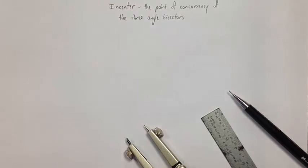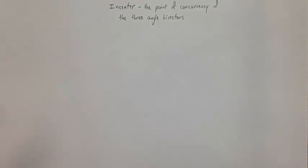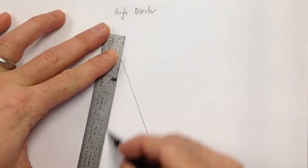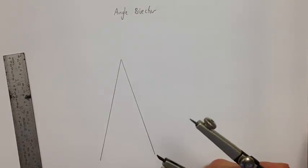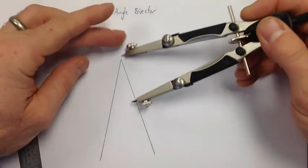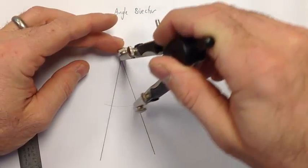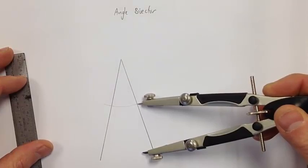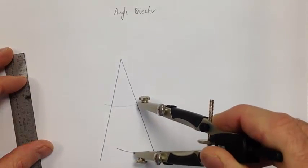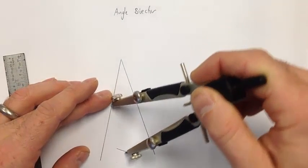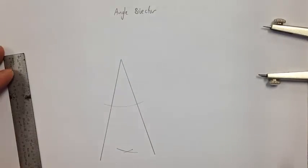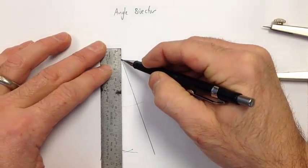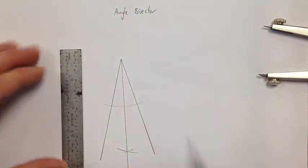Now we'll construct the in-center, which is the point of concurrency of the three angle bisectors. First, let's review the angle bisector construction, starting with any random angle. We open the compass, place the point at the vertex, and swing an arc through both sides of the angle. Then move the compass to each intersection with the arc and swing arcs in the area where the bisector will come through, crossing those arcs. Connect the vertex to that intersection, and there's our angle bisector.